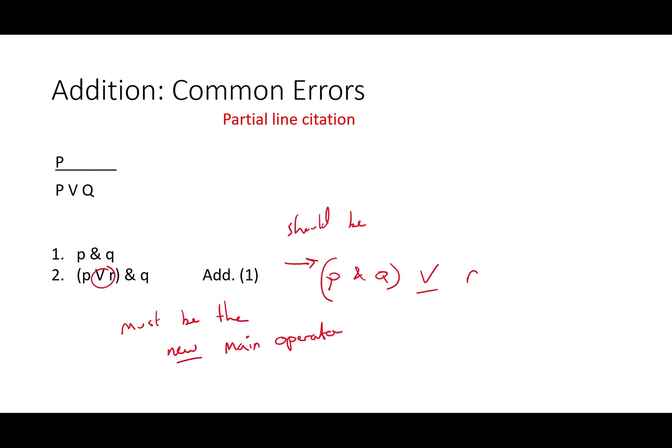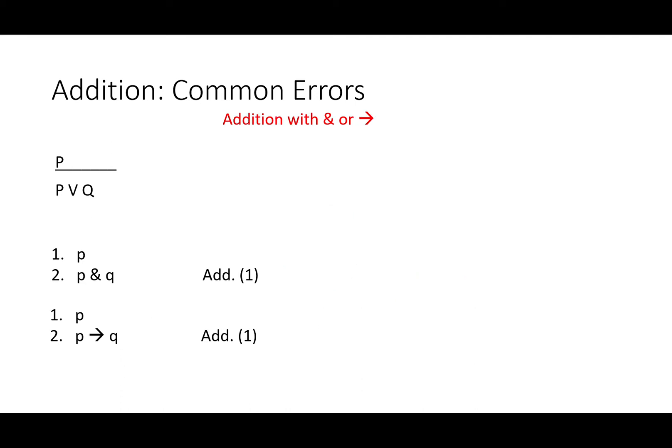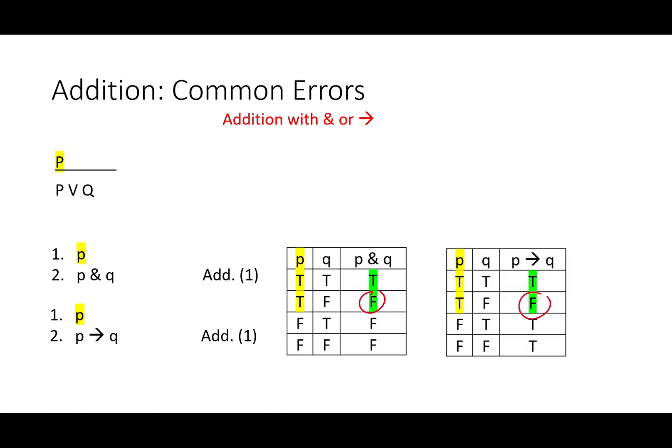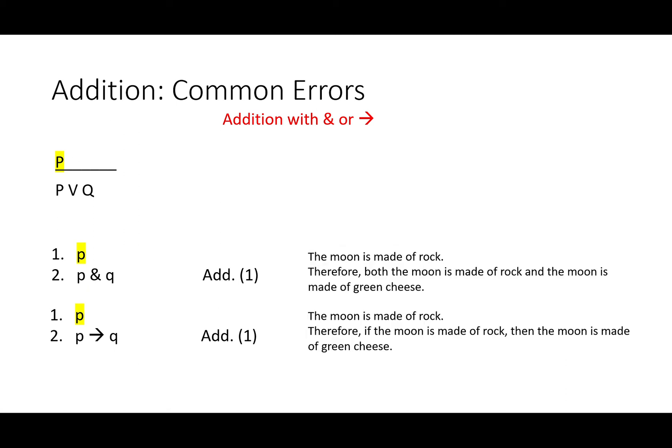It would take you a few more steps to get to that. You would need to do P and Q or R, because addition adds a disjunction as the new main operator of the sentence. A more important error is using addition to introduce a conjunction or a conditional. P, therefore P and Q. P, therefore if P then Q. These are both serious errors because they go from a true thing to something that might be false. We can look at the truth table and we can quickly see that these are not valid arguments. All true premises sometimes lead to false conclusions here.